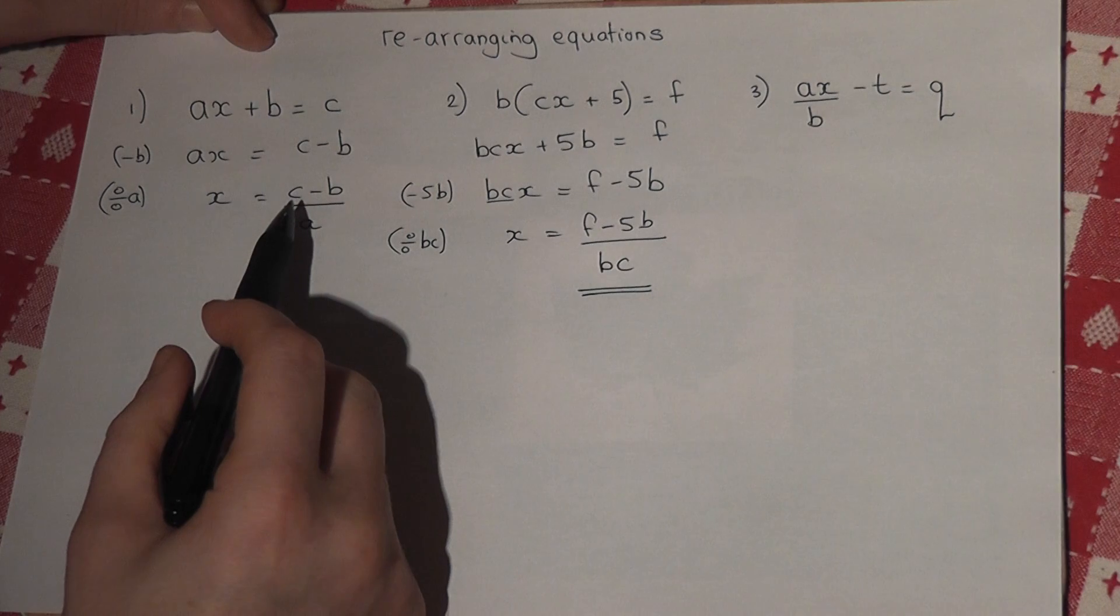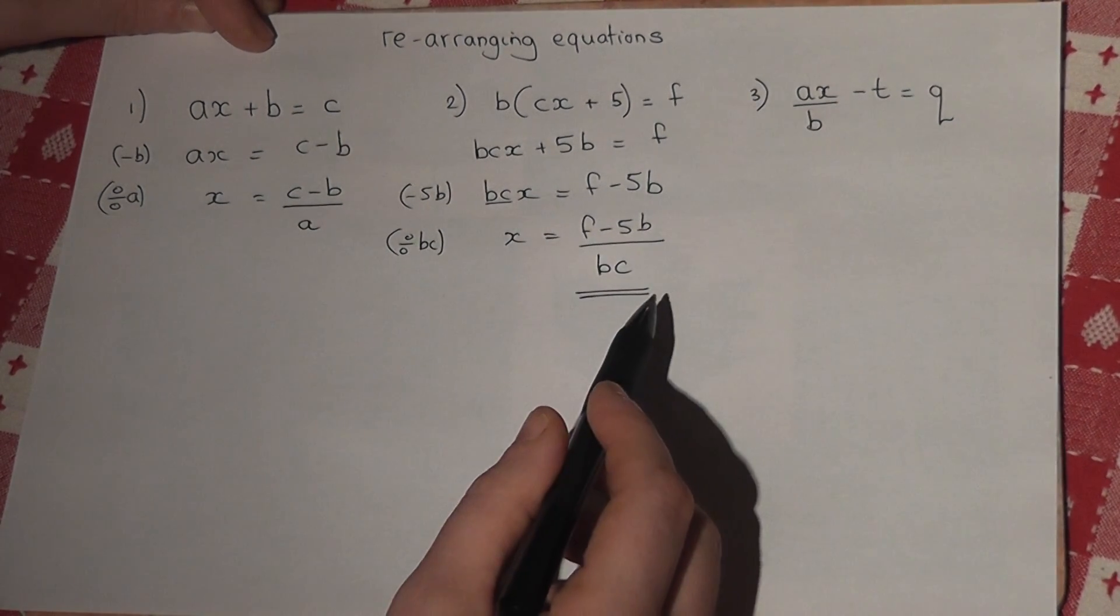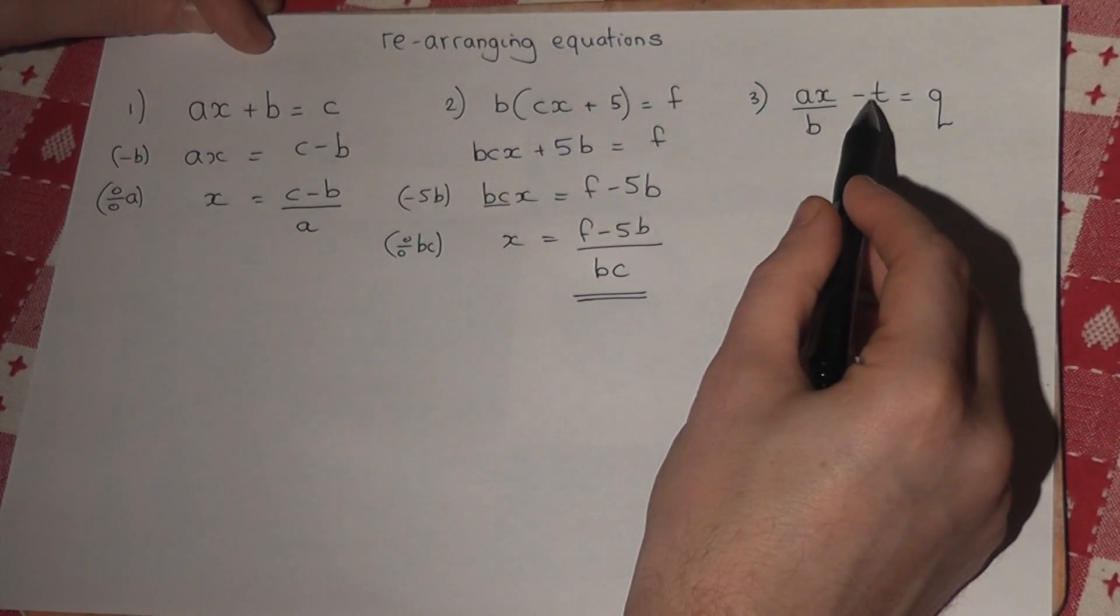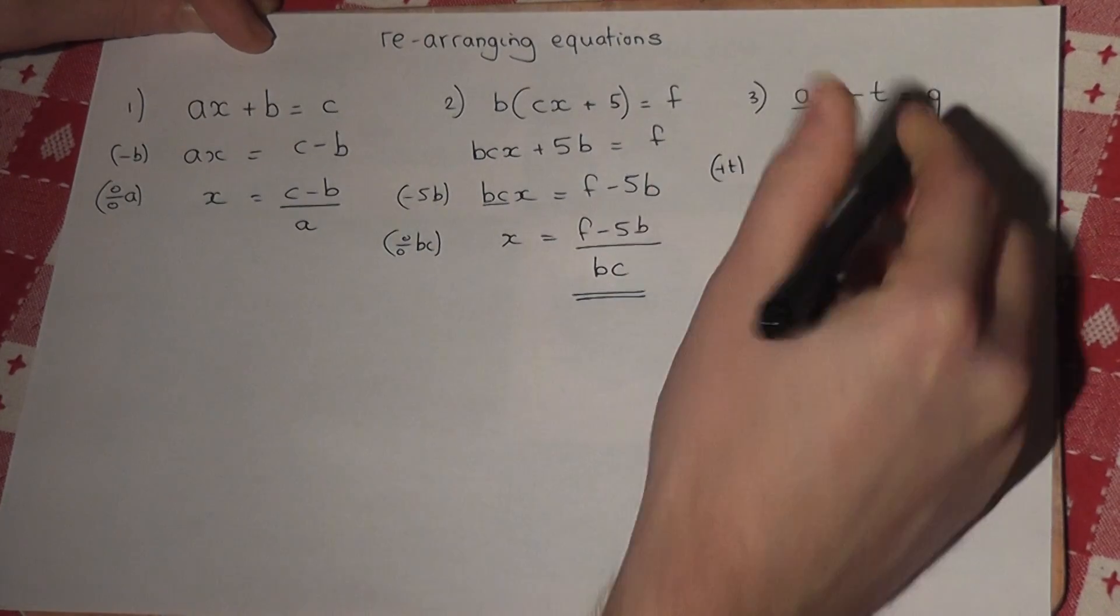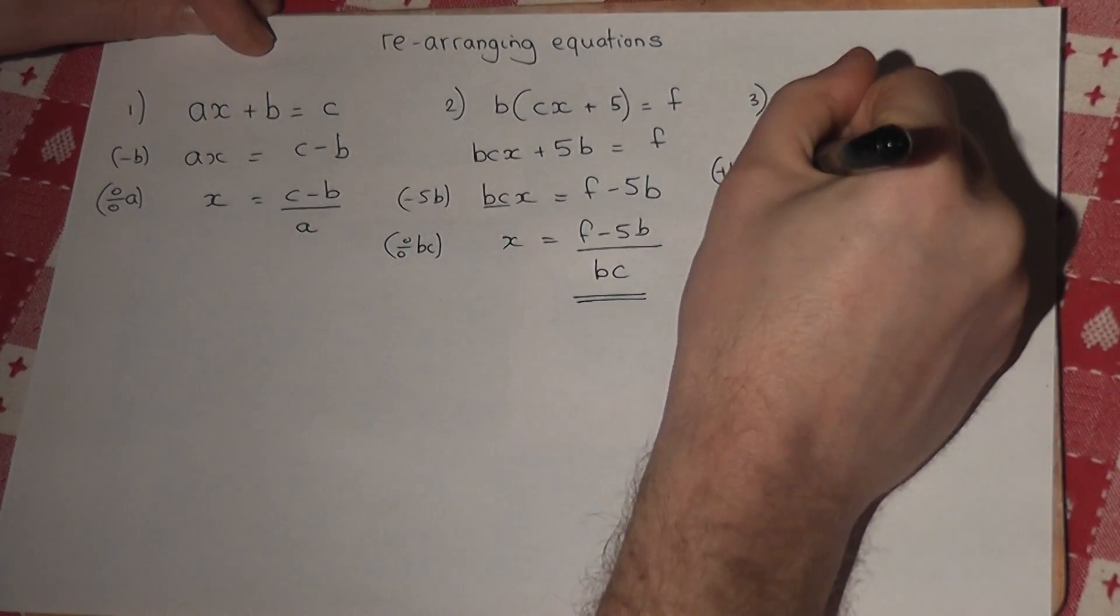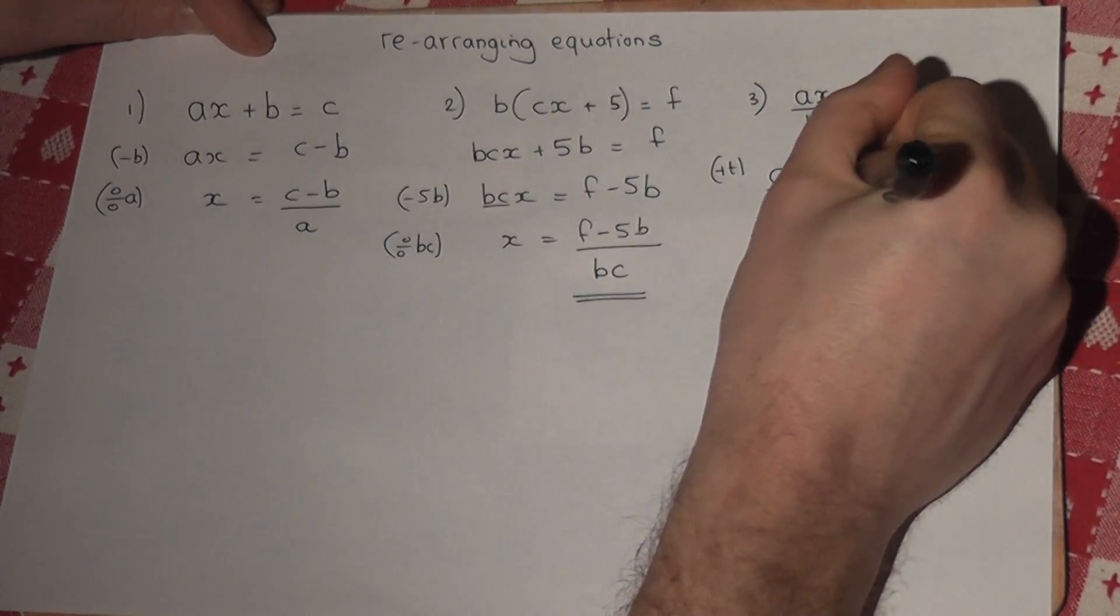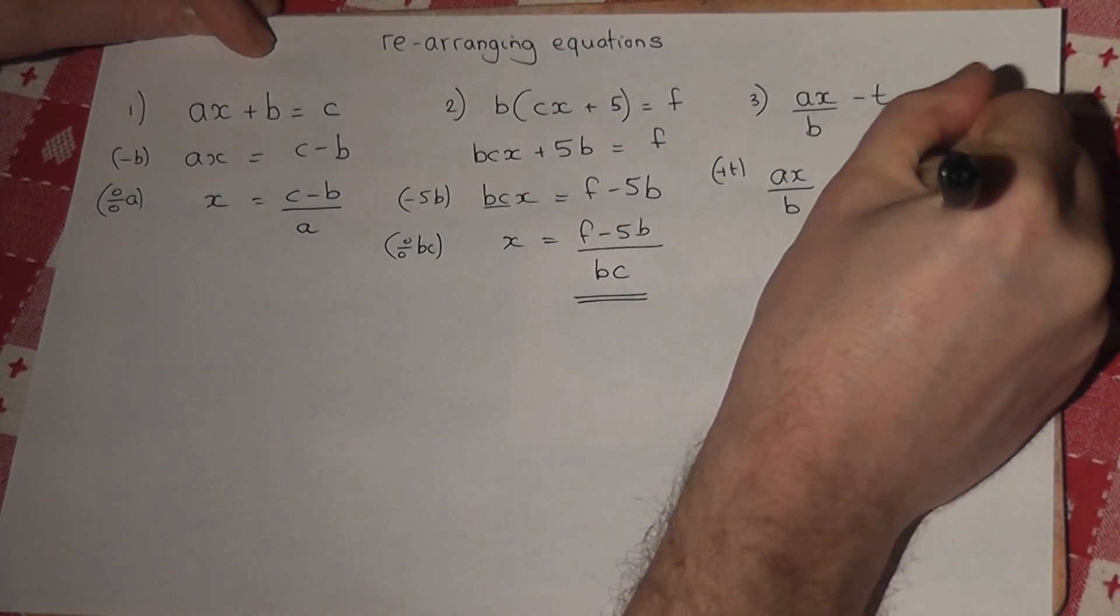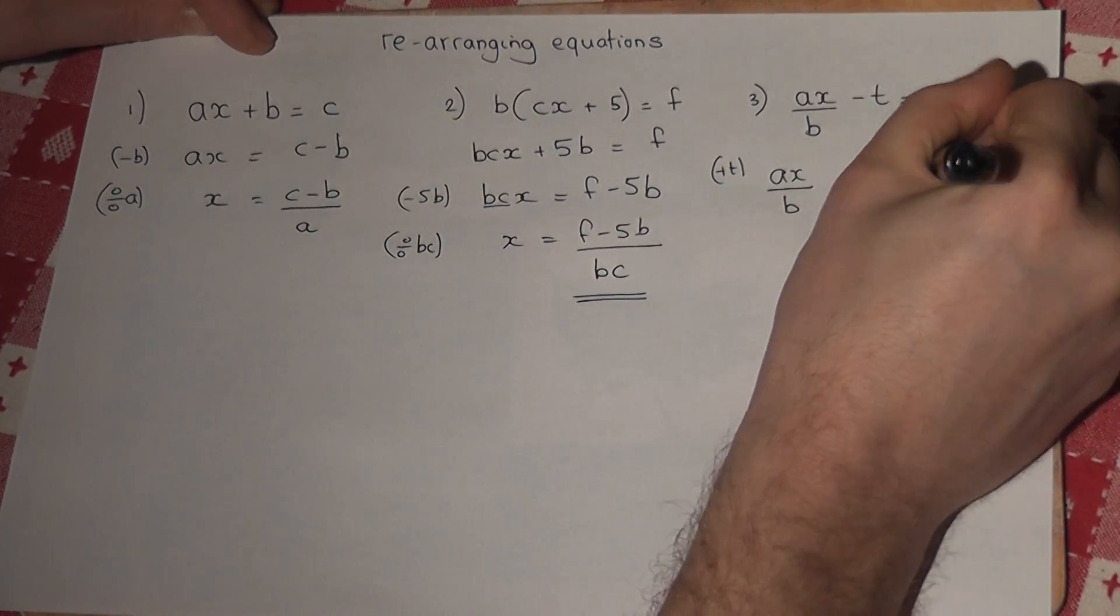Now, when our equations have fractions in, we still follow the same general rule. So I've got a minus t here, so I'll begin by adding t to get the x term by itself. So ax over b will equal q plus t. Now then, I then place a bracket around this right-hand side, because I will now times up by the b.